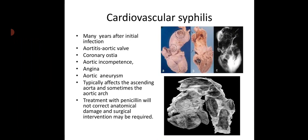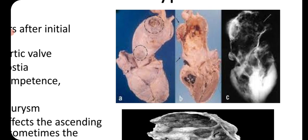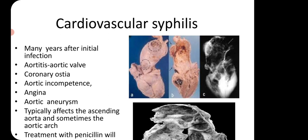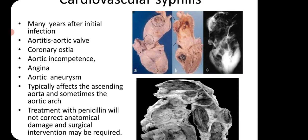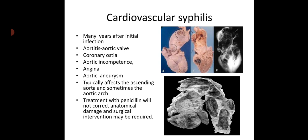Cardiovascular syphilis can occur many years after initial infection. The main lesion is aortitis in the aortic wall, then affecting the coronary ostia. Features are aortic incompetence, angina, and aortic aneurysm. It typically affects the ascending aorta and sometimes the aortic arch. Treatment with penicillin will not correct anatomical damage and surgical intervention may be required.